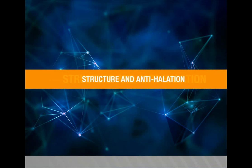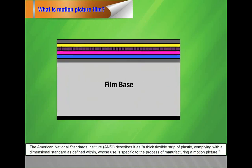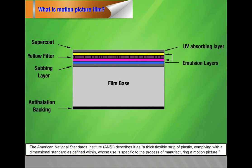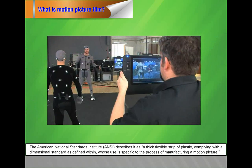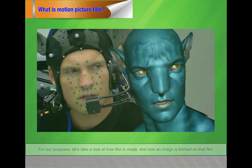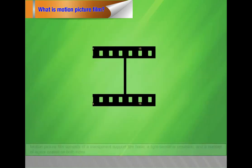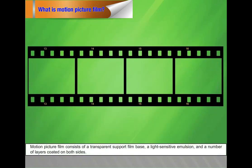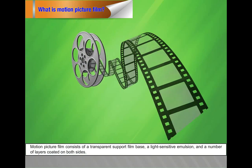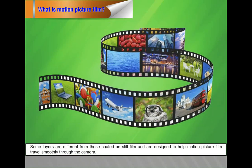Structure and antihalation. In this video, we are going to see about structure and antihalation. What is motion picture film? The American National Standards Institute (ANSI) describes it as a thick, flexible strip of plastic complying with a dimensional standard, whose use is specific to the process of manufacturing a motion picture. Film is made up of layers, and it is the combination of these layers that give each film its character. Motion picture film consists of a transparent support film base, a light-sensitive emulsion, and a number of layers coated on both sides. Some layers are designed to help motion picture film travel smoothly through the camera.